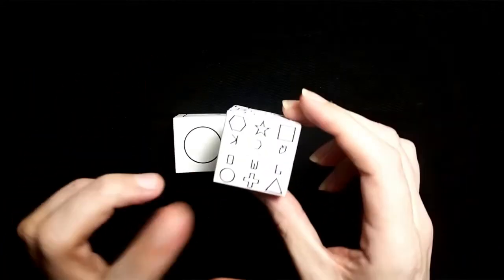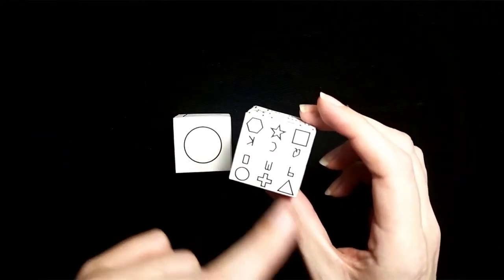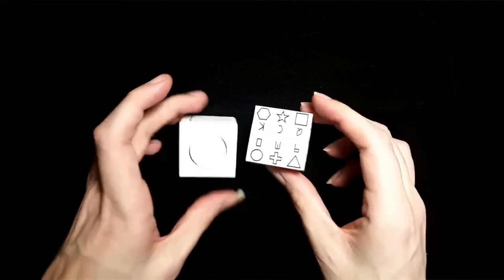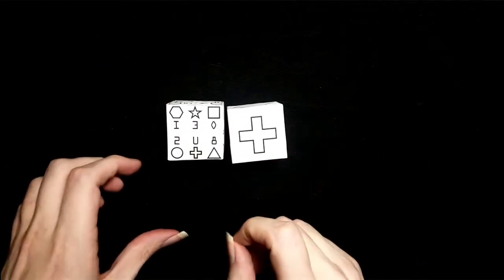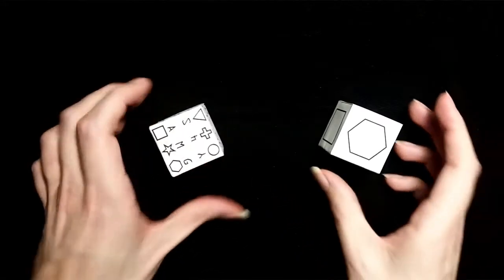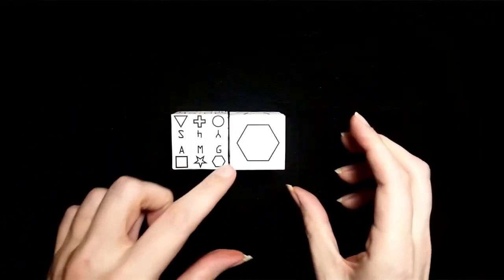And then each base on the other die has six values corresponding to each symbol. So we just take our dice and roll them, and we rolled a U. And let's try it again. And we got a G.